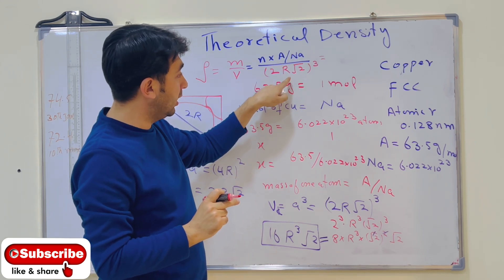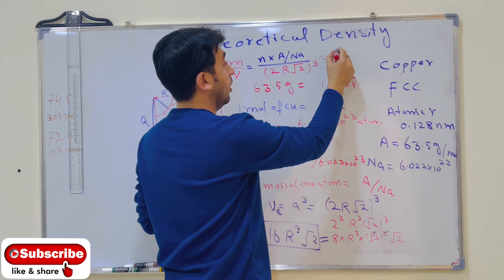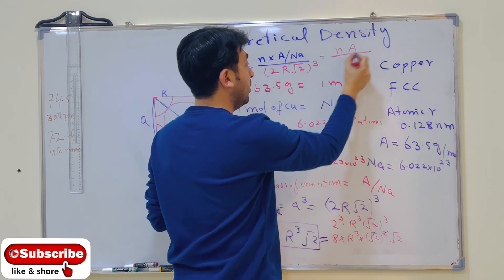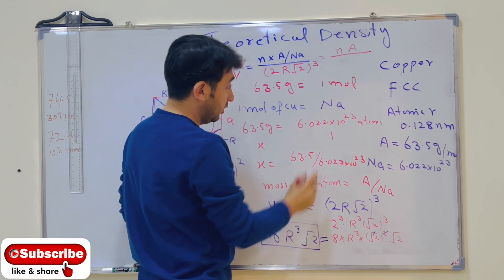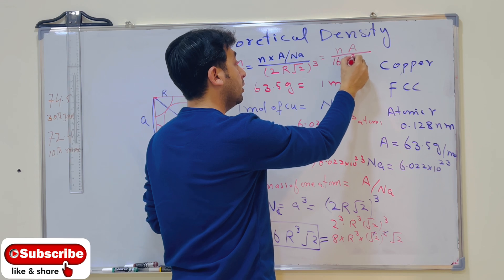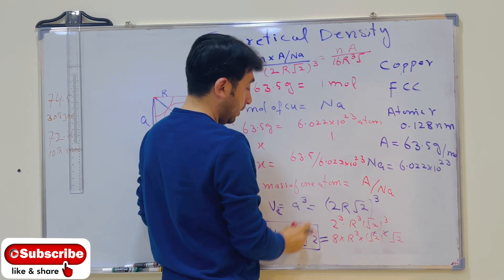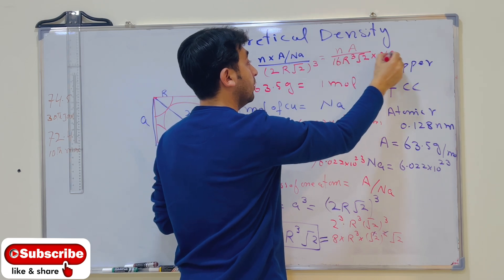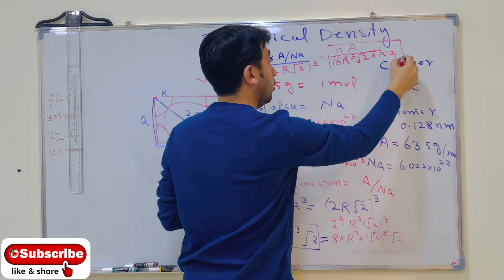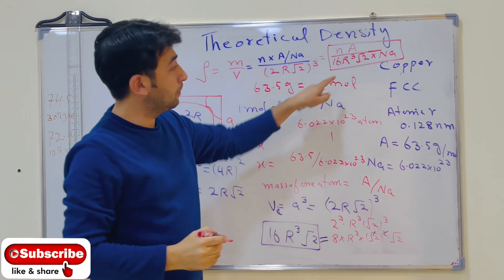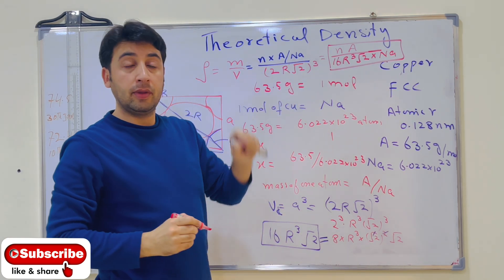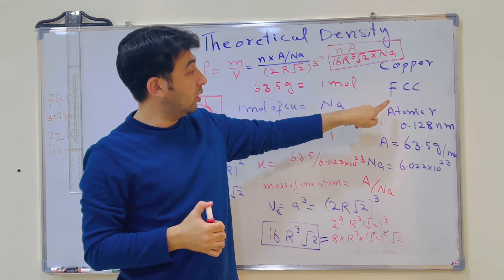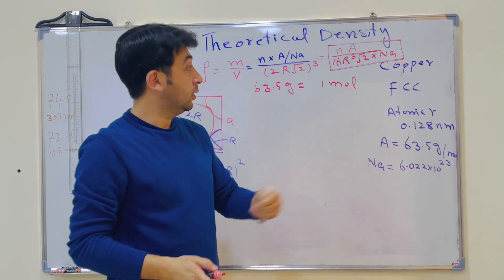Bringing everything together, the final density formula is: density equals n times atomic mass, divided by 16r³√2 times Avogadro's number Nₐ. Using this formula, we can find the theoretical density of copper, which has the FCC crystal structure.